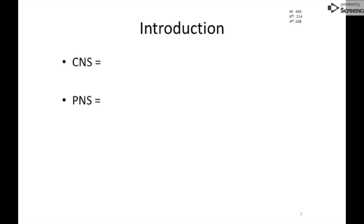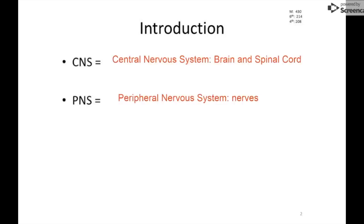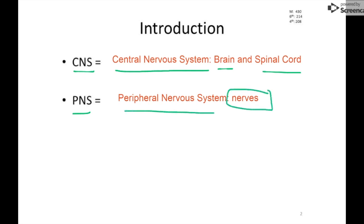The central nervous system, which we're hopefully familiar with from our previous unit, consists of your brain and spinal cord. The peripheral nervous system is all the nerves. So when we start talking about spinal nerves and cranial nerves, that's what we're talking about — the peripheral nervous system.